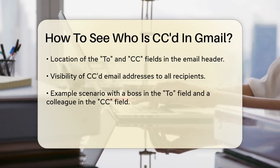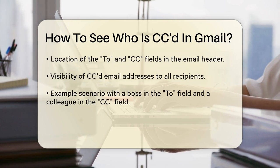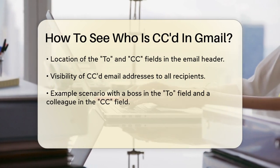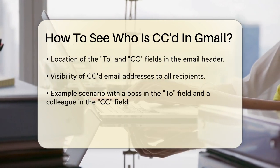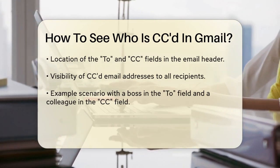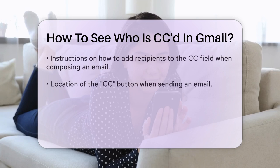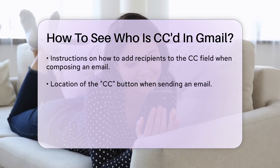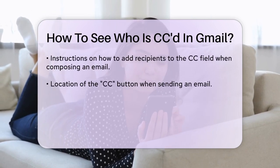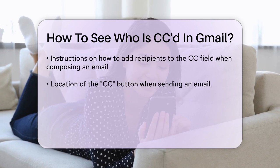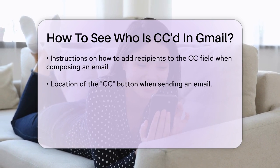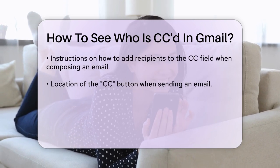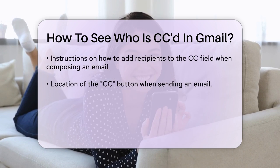This means that all recipients can see the email addresses of everyone else who was included in the email. For example, if you receive an email where your boss is in the To field and your colleague is in the CC field, you'll see both your boss's and your colleague's email addresses when you open the email.